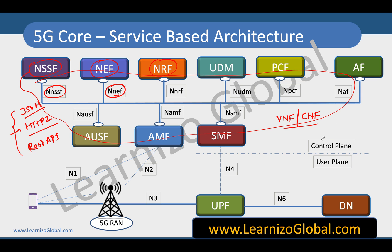This is typically applicable for the control plane architecture. However, for the user plane, we still have mostly reference point architecture, which includes interfaces like N1, N2, N3, N4, N6, and a few more interfaces in the reference point architecture.